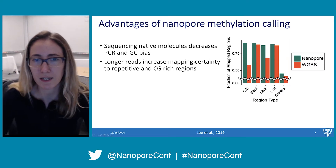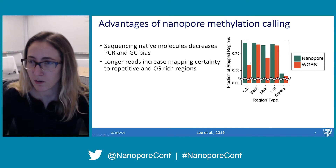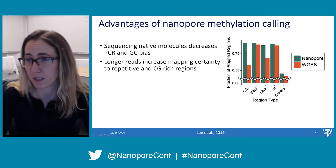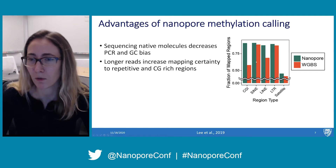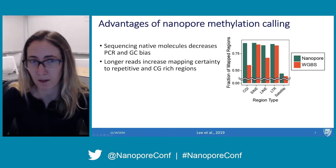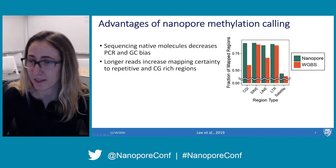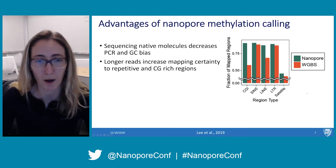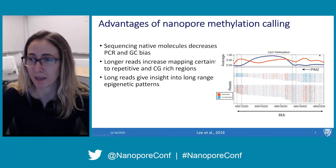Additionally, longer reads increase mappability to certain repetitive DNA and CG-rich regions. Comparing the fraction of mapped reads between nanopore methylation sequencing and whole genome bisulfite, in CG islands we lose a lot of whole genome bisulfite reads because they cannot map and are less enriched due to CG bias. We see this same trend with LINE elements and satellite DNA. Lastly, long reads give insight into long-range epigenetic patterns — reads can span multiple different genomic elements, allowing us to see differences in methylation between different alleles.